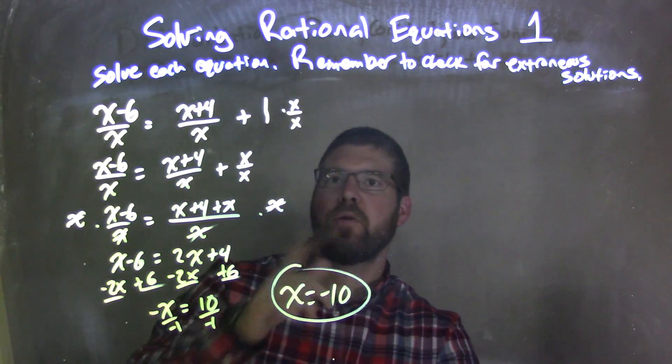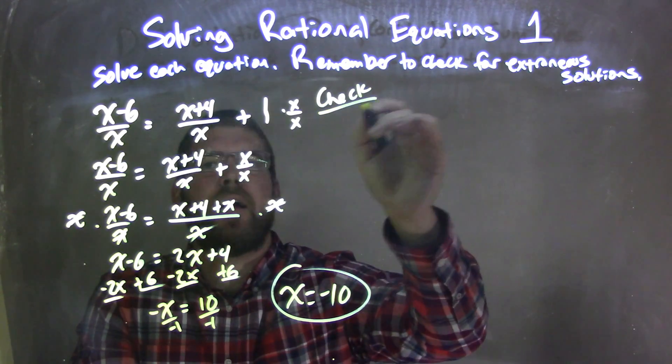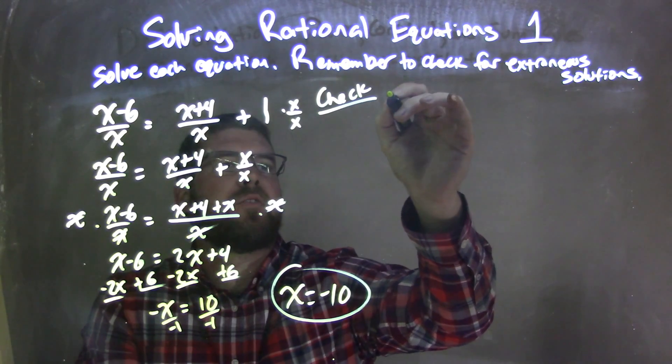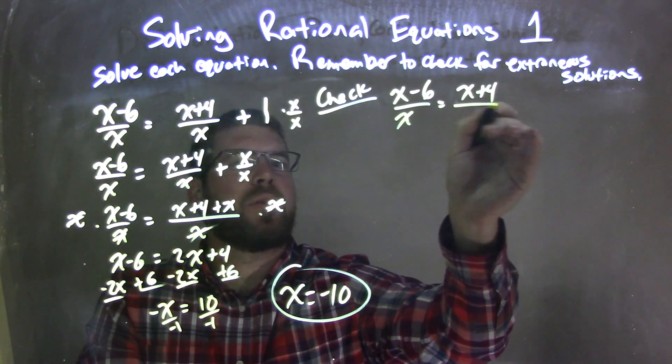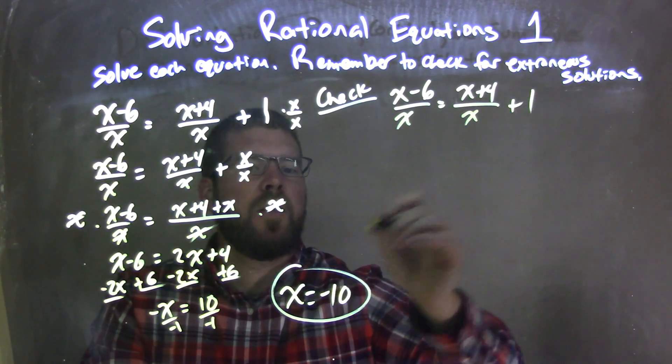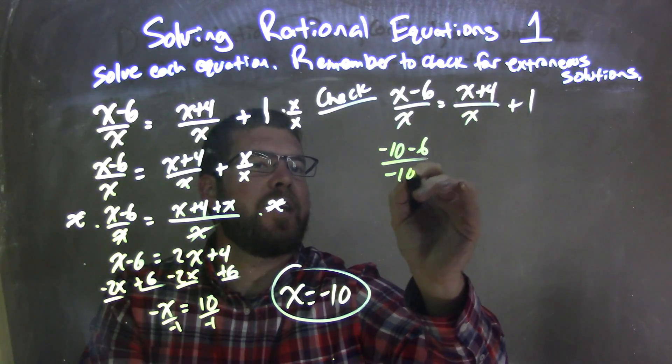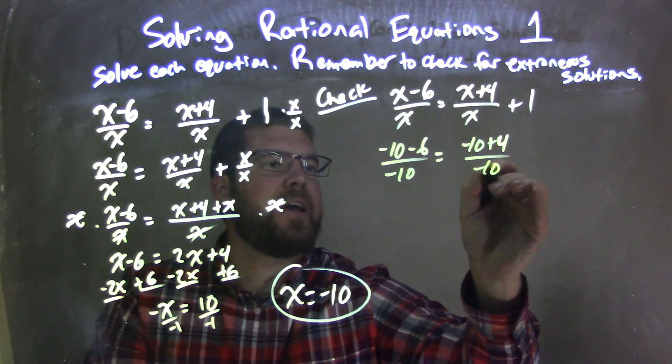Okay, fantastic. So now we're going to check that. Check that. I'm going to plug negative 10 in for my x. So we can rewrite the equation here: x minus 6 over x equals x plus 4 over x plus 1. Let's plug negative 10 in. So for x, we have negative 10 minus 6 over negative 10 equals negative 10 plus 4 over negative 10 plus 1.